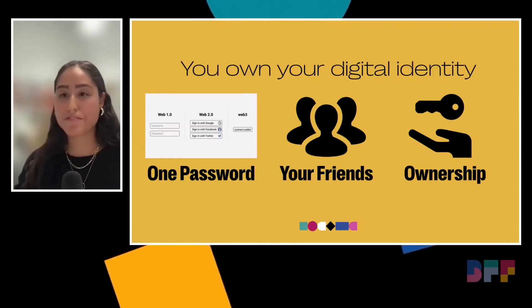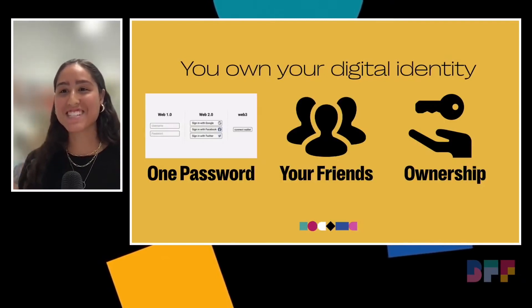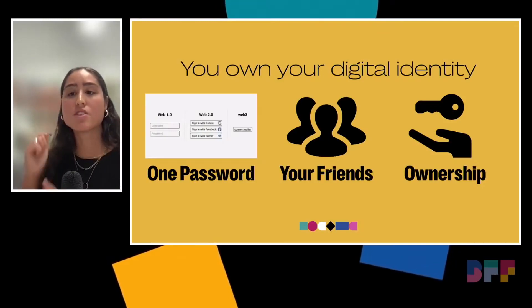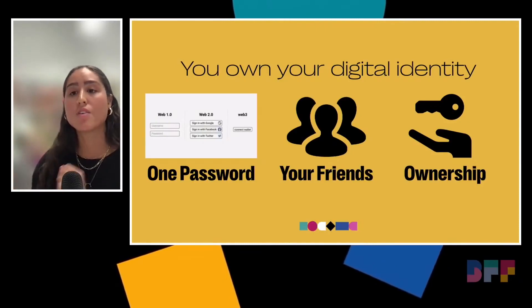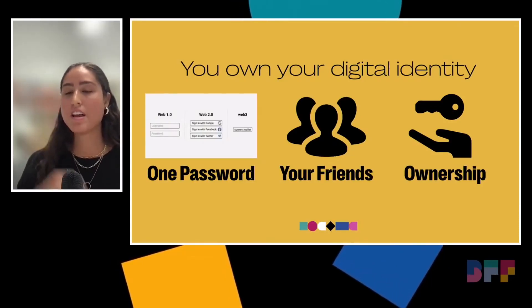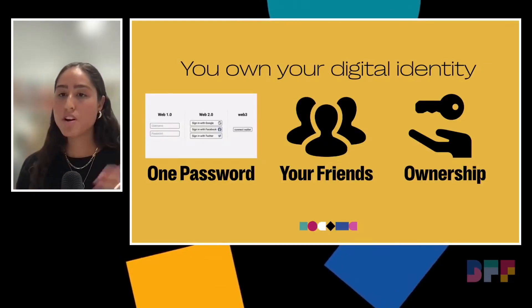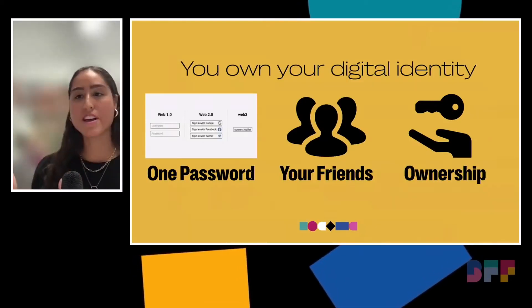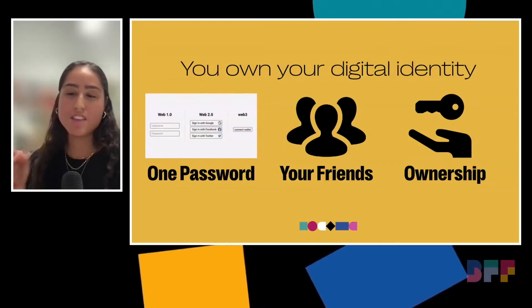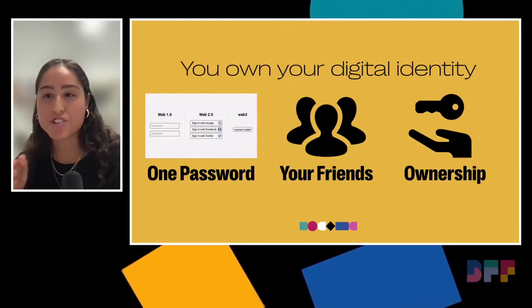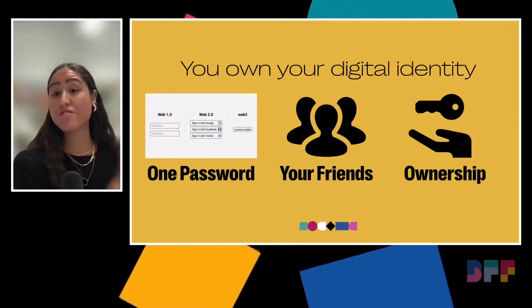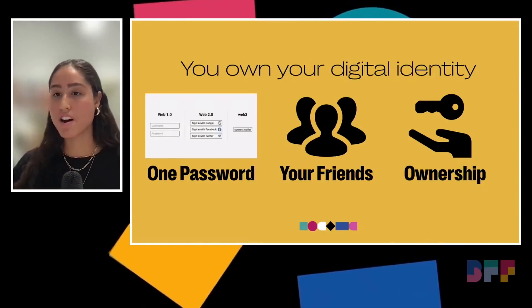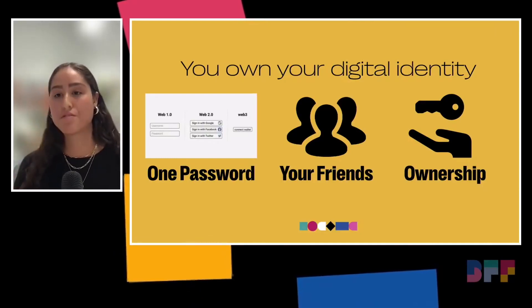Number two: your network. All my friends I added on Instagram — I can take them over to LinkedIn because those connections are stored on the blockchain, and LinkedIn can know I have those connections because we're all looking at the same database. Number three is ownership. My brother is a professional video gamer — if he acquires a magical sword in Overwatch, he can transfer it to another game like Fortnite and it stays with him because he has one digital identity. There are entirely new economies and products that can be produced from this technology.